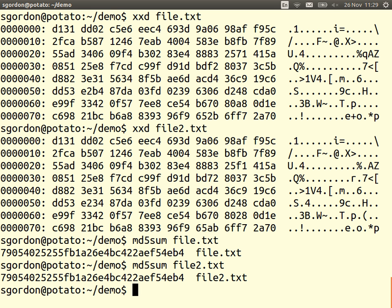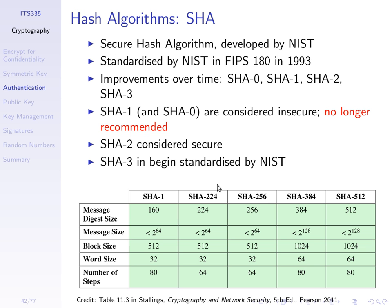SHA — the Secure Hash Algorithm — was developed as an improvement and has gone over several variations. The original SHA, SHA-1, SHA-2, and SHA-3 is being developed at the moment. SHA-2 is commonly recommended at the moment as being a secure hash function. SHA-1 and SHA-0 have some theoretical limitations and are not recommended in most cases. They produce different output lengths — you can choose. MD5 was 128 bits. The basic output length of SHA was 160 bits, but you can choose 224, 256, and up to 512 bits as output. The longer the output, the less chance of collisions.